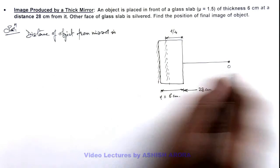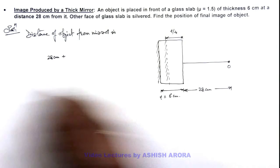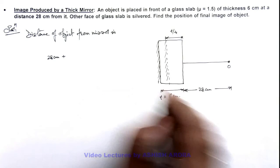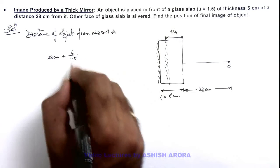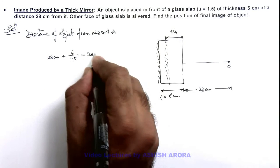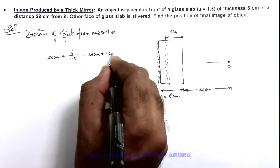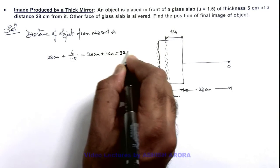This distance will be 28 centimeters plus this distance t by μ, that is 6 divided by μ which is 1.5. This is 4 centimeters. 28 centimeters plus 4 centimeters equals 32 centimeters.